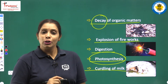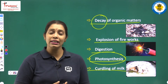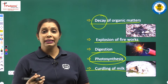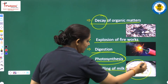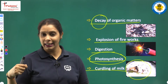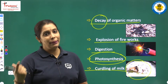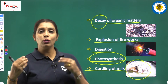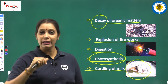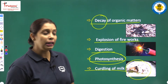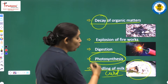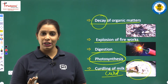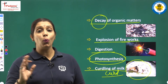Curdling of milk — students, sometimes when you forget to keep milk in the refrigerator, you find that after some time it curdles. Dahi jamane ke liye hum kya karte hain? Rat ko lukewarm milk ke andar halka sa jawan daalte hain — a pinch of curd we add in it. And finally we get curd. So curd formation is also an example of chemical change.